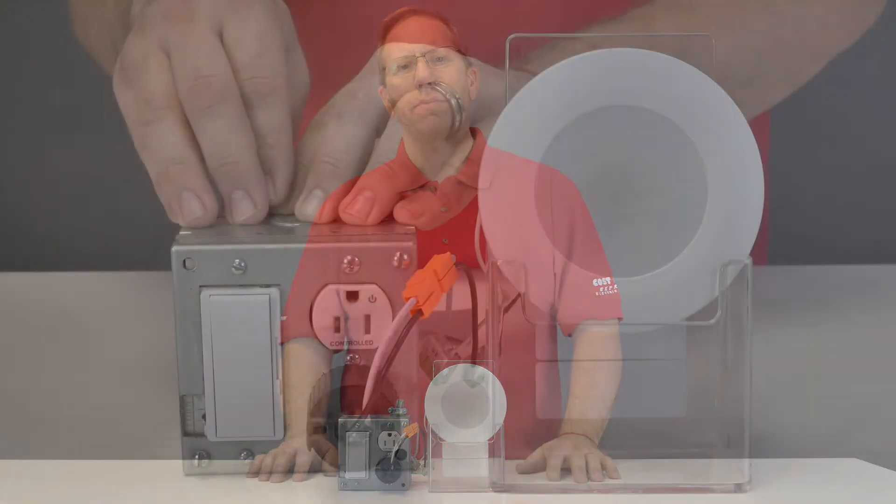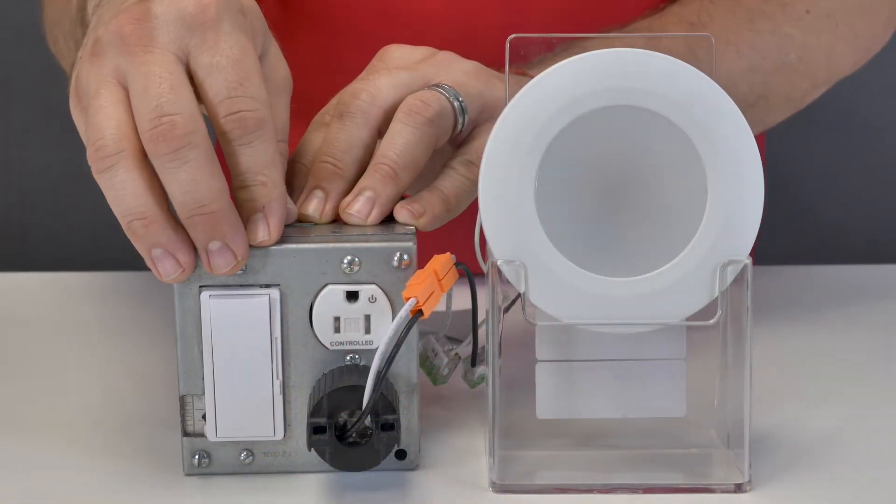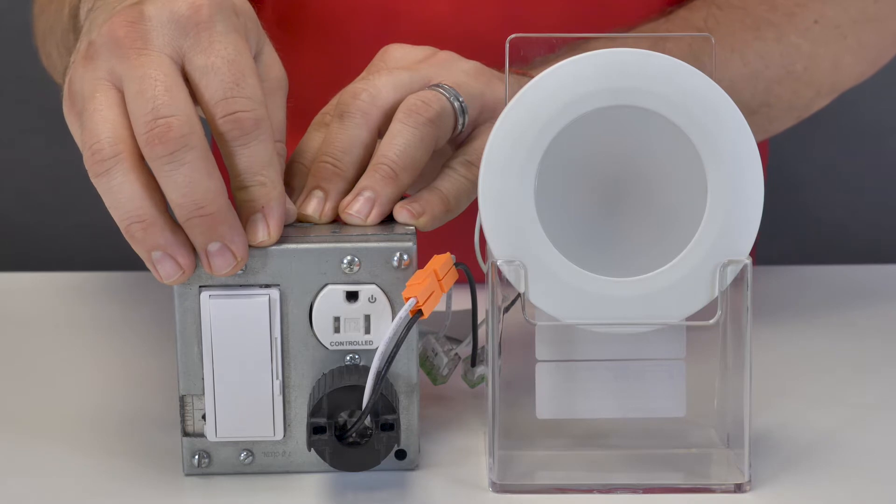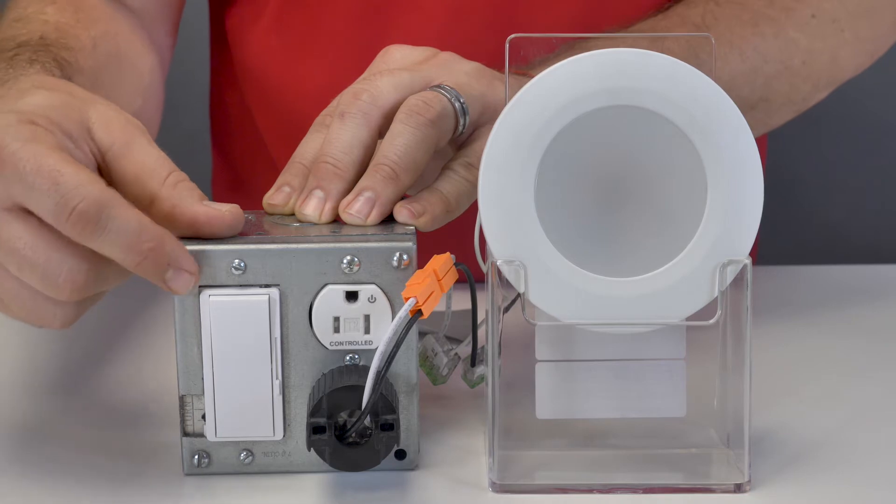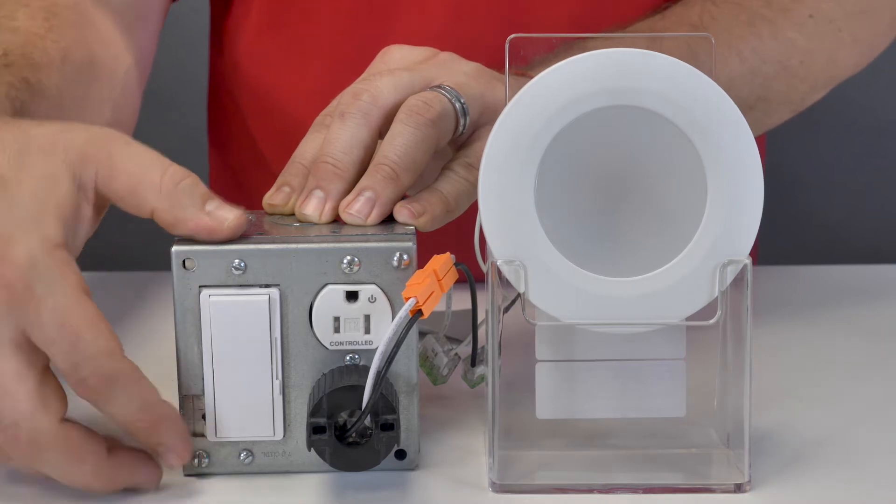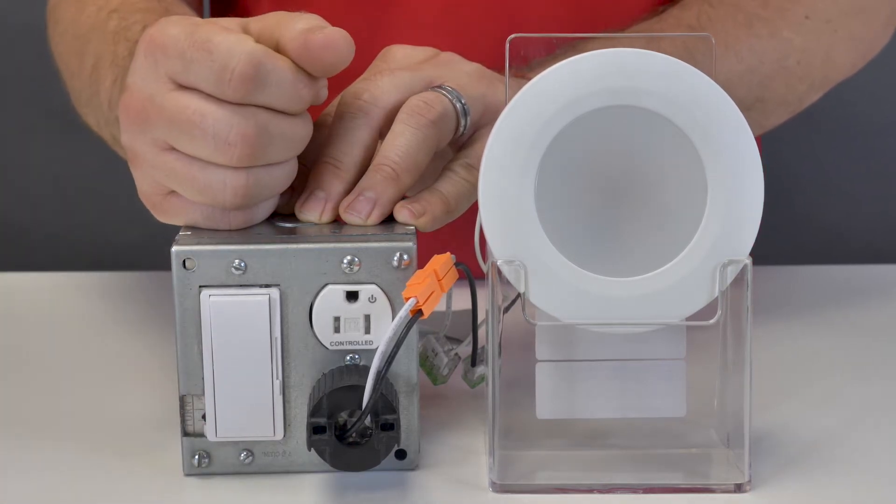Let's get into the adjustments. In this example, we have a Lutron CFL LED series dimmer with control. In this particular model, we have a cutaway on the industrial cover so you can see the lever. Normally you would remove the faceplate to access the controls.